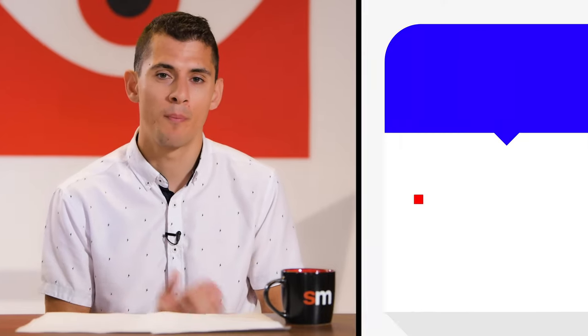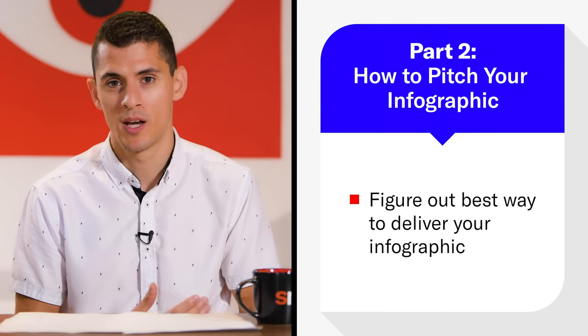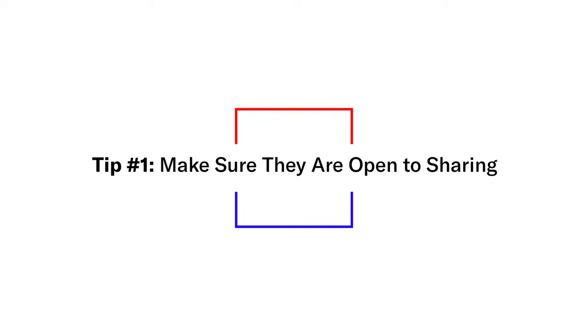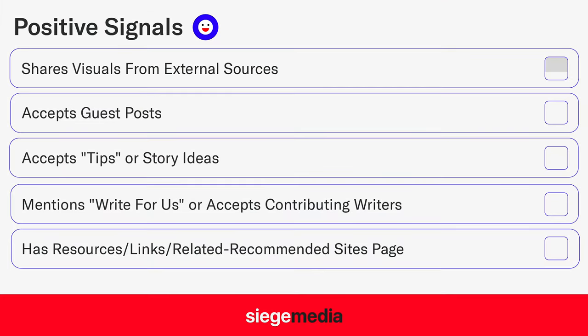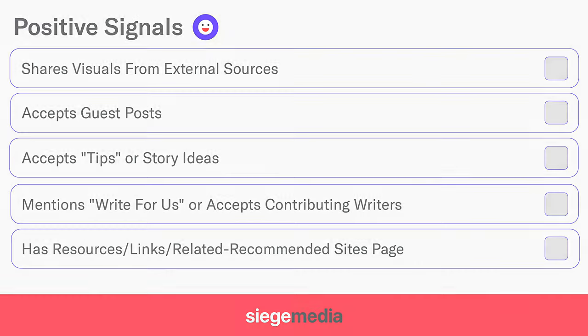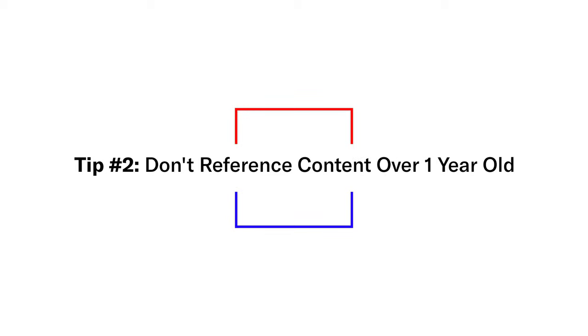Part two is actually writing that pitch email and figuring out the best way to deliver your infographic to these people. The first thing is to make sure they're open to sharing. I did a whole piece about how you can determine if a site will actually link out — there are positive signals to look for. If you're using the levels of connection and Google searches I described, you'll already be targeting sites that have shared infographics before. Also, avoid referencing content that's over a year old, because savvy marketers refreshing old content are probably not likely to link out.